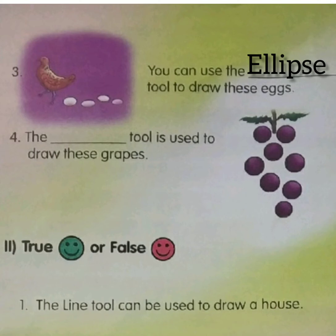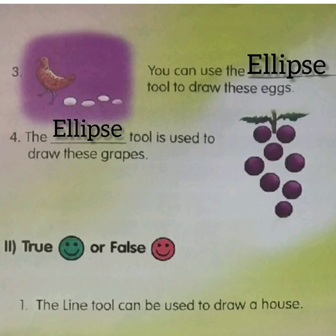Fourth question: the blank tool is used to draw these eggs. What is the shape of these eggs? Circle. So which tool do we use to draw circles? Ellipse tool — we can use the ellipse tool to draw ellipses and circles. The answer is ellipse tool. Write the answer ellipse.